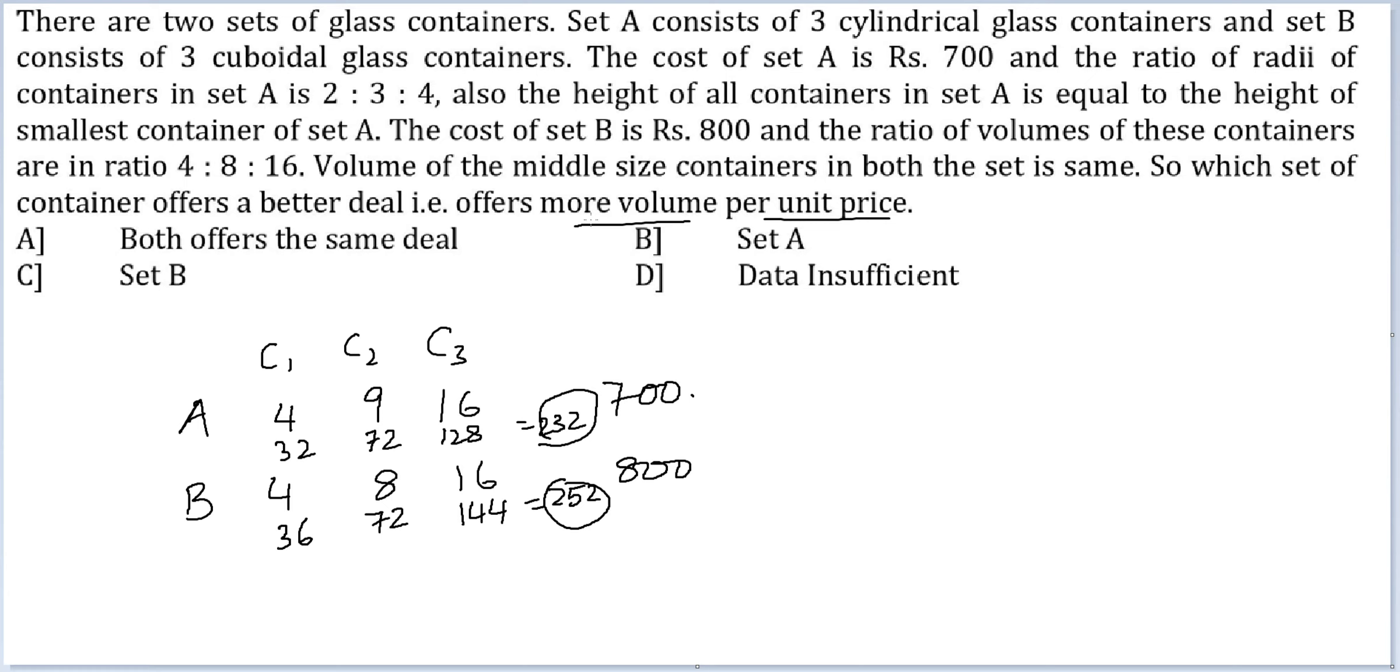But this is not what you are after. You are after volume per unit price. So you have to compare 232 by 700 and 252 by 800. Difference of the numerators is 20. Difference of the denominators is 100. So this is 1 by 5. This is definitely more than 1 by 5. 140 by 700 would be 1 by 5.